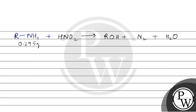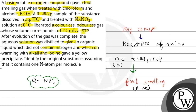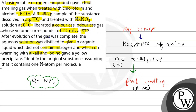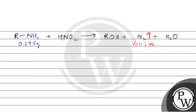Let's check if the reaction is balanced: three hydrogens, two nitrogens — yes, the reaction is balanced. Now, the colorless and odorless gas obtained here is nitrogen gas. The volume of nitrogen gas given is 112 mL at STP. To find the moles of nitrogen, moles of N₂ = volume divided by molar volume at STP, which is 22,400 mL. So moles of N₂ = 112 / 22400 = 5 × 10⁻³.